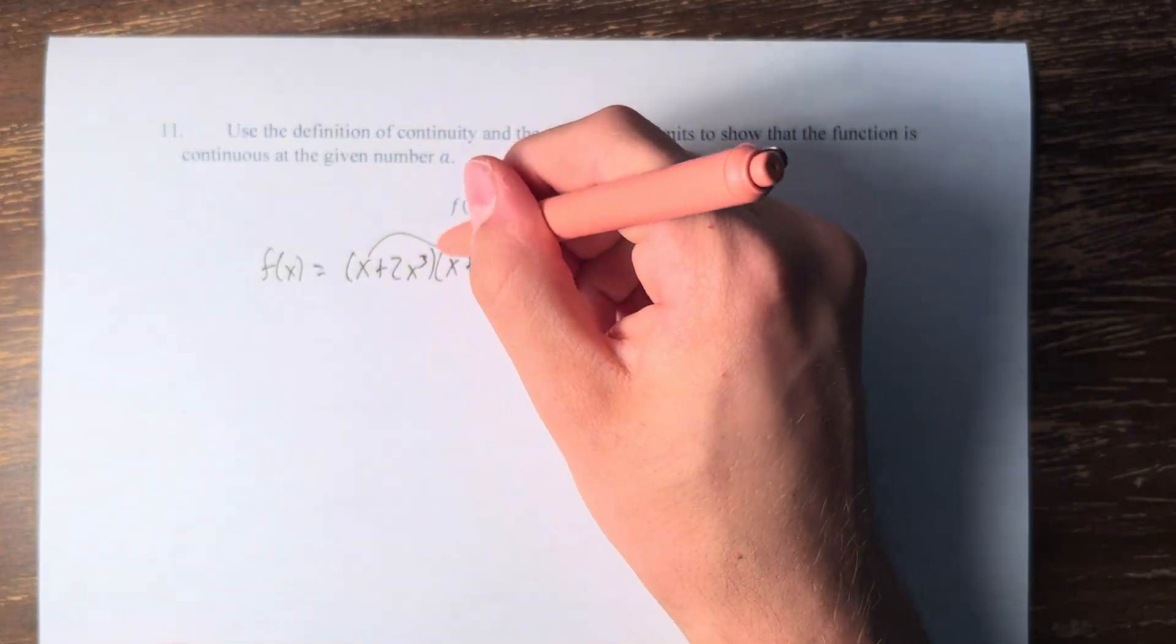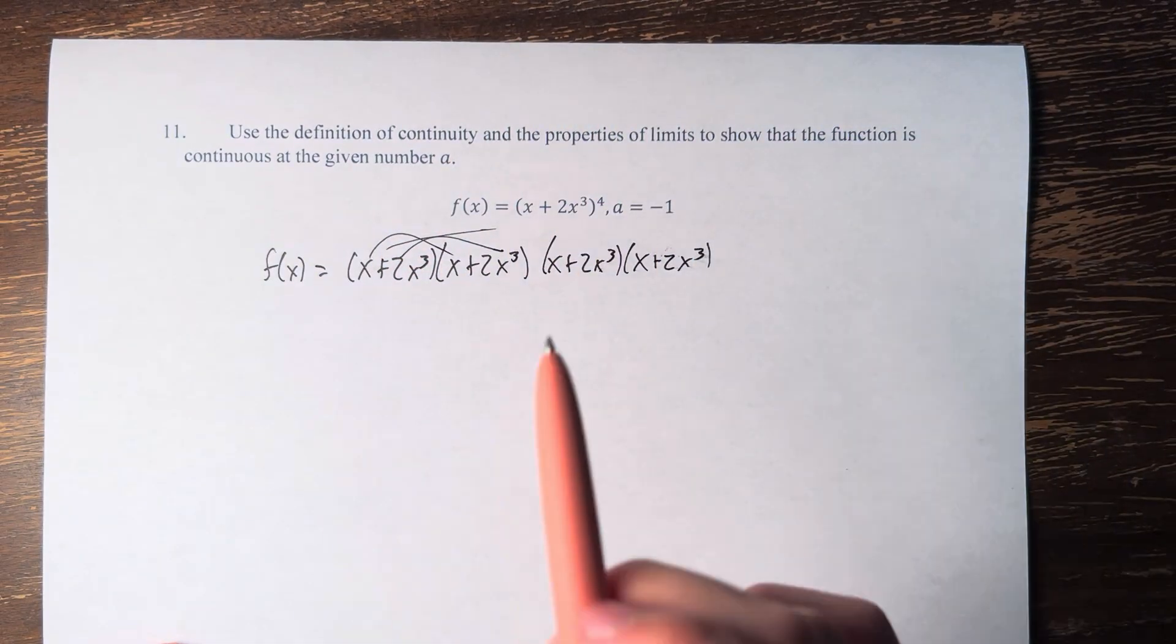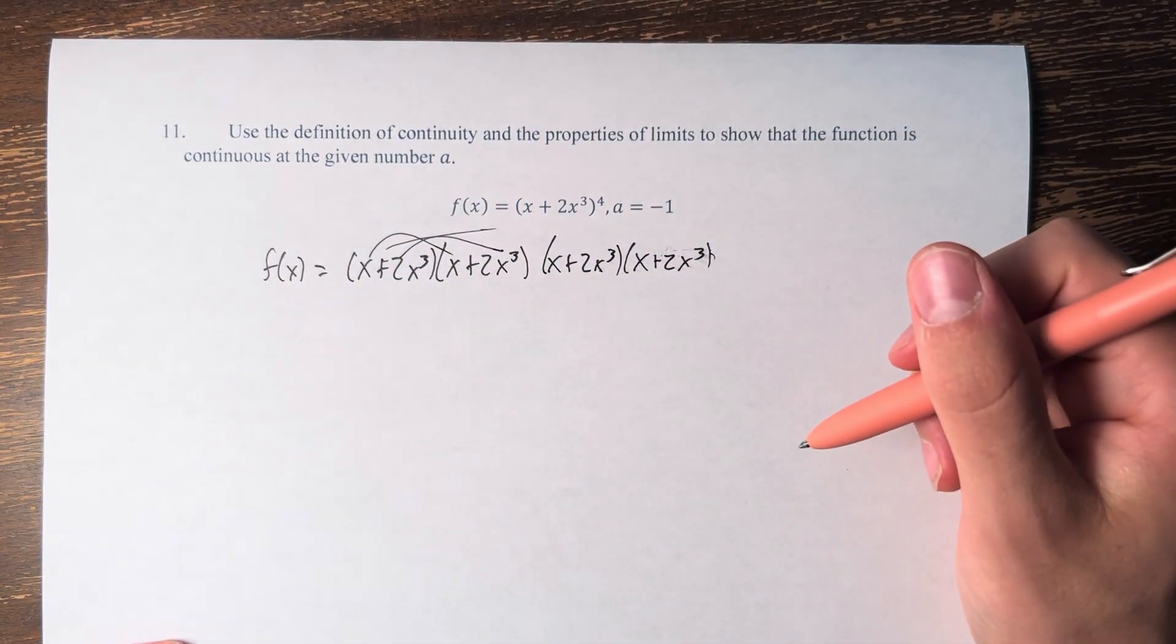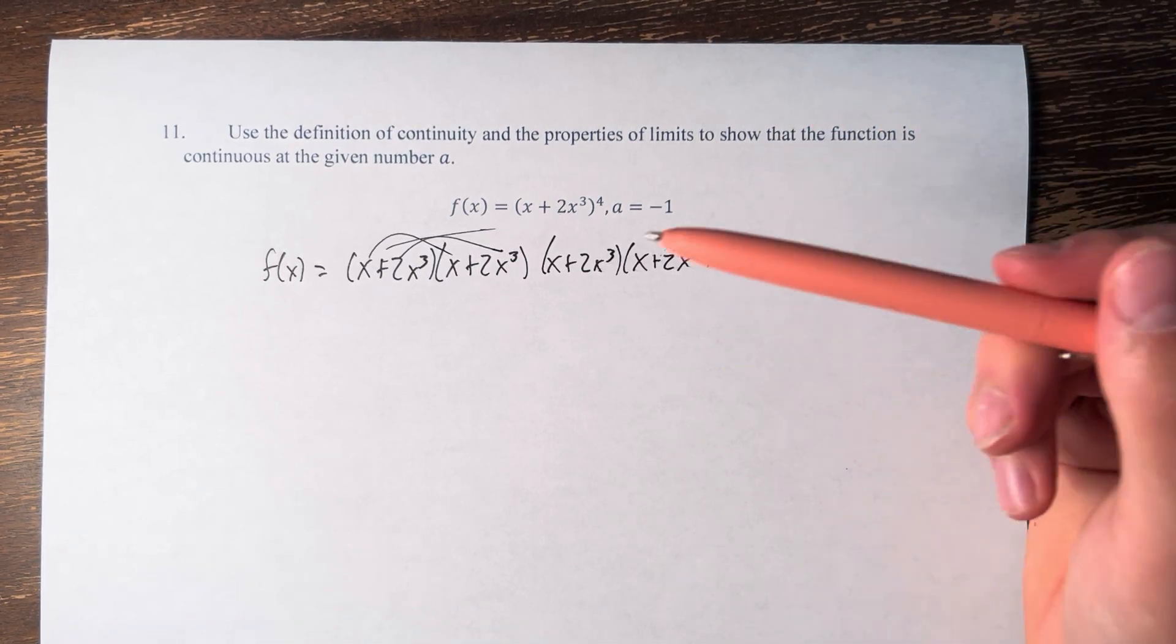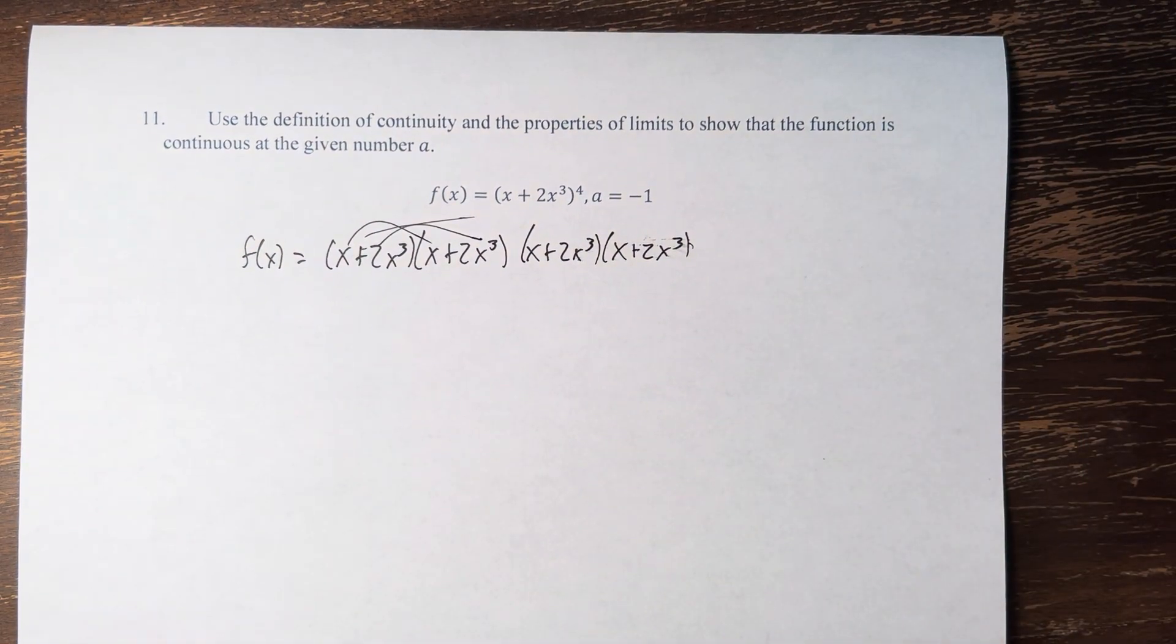Now, we don't have to actually distribute this whole thing out, right? But if we did, we would get a polynomial. And that is because we're just multiplying different polynomials together, so we will get one larger polynomial.